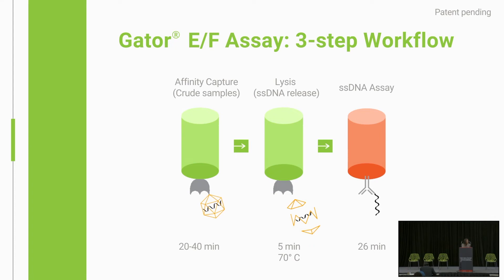Then the second probe, which is a DNA-specific binding probe, goes to the 96-well plate and binds to the DNA. So you have two affinity-specific binding steps here — capturing both capsid concentration and DNA concentration — to give you very accurate ratio information.